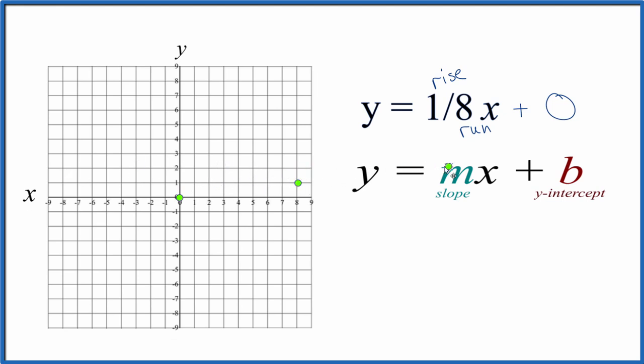We can do that again, rise 1 and go over 8, but we're off our graph paper. Let's do this. Go back to the y-intercept, go down 1, and go to the left 8.